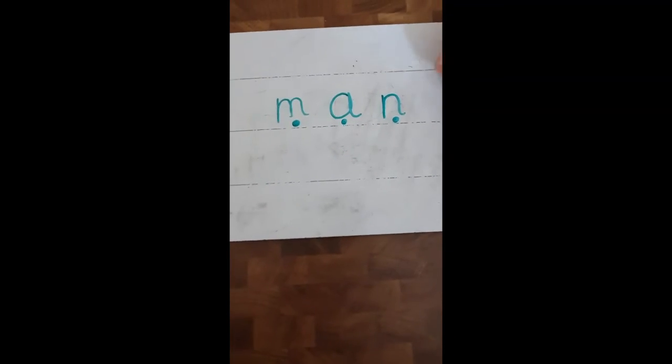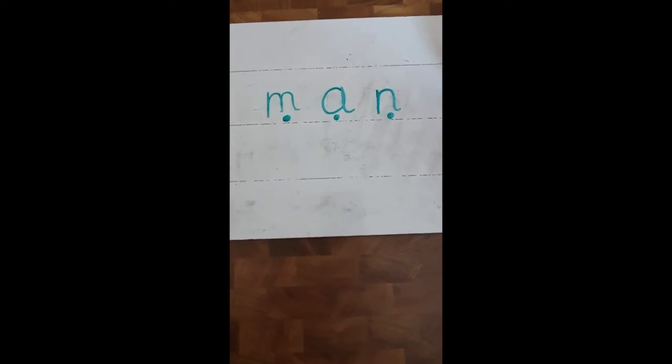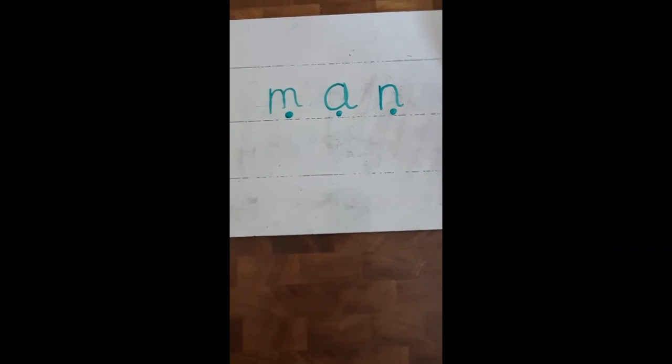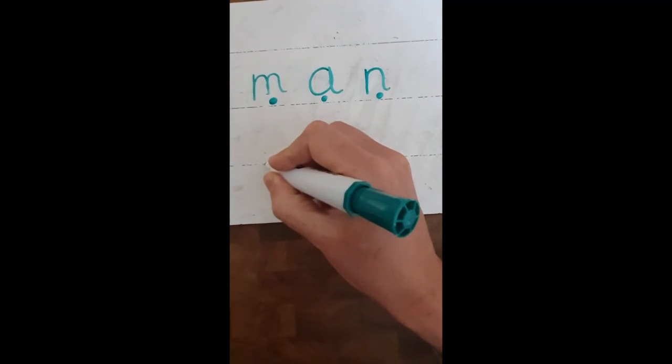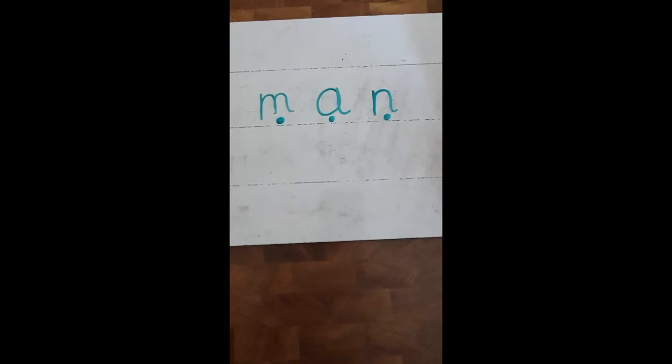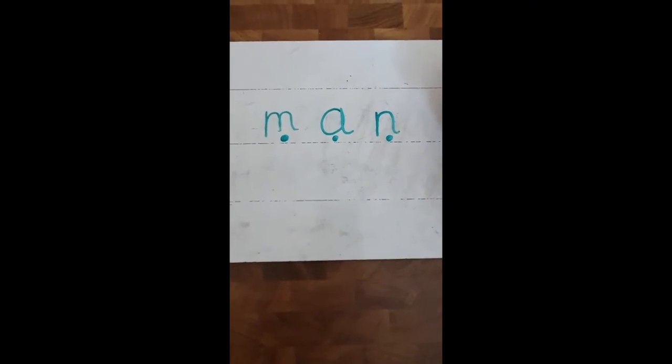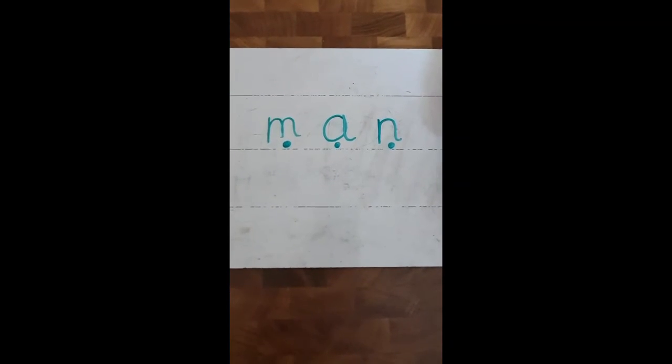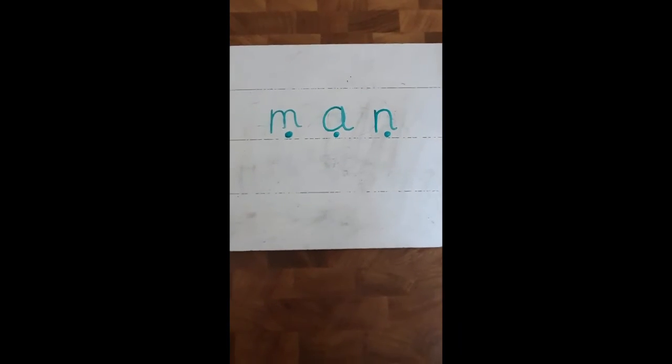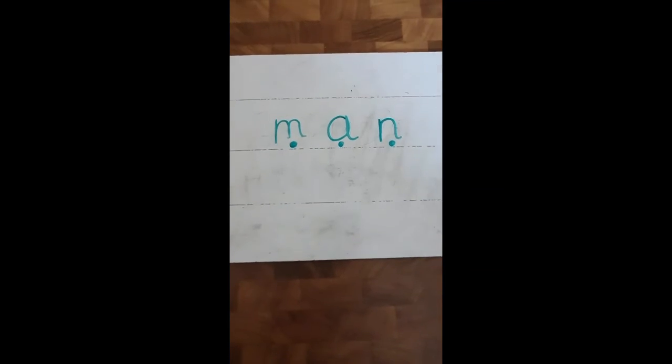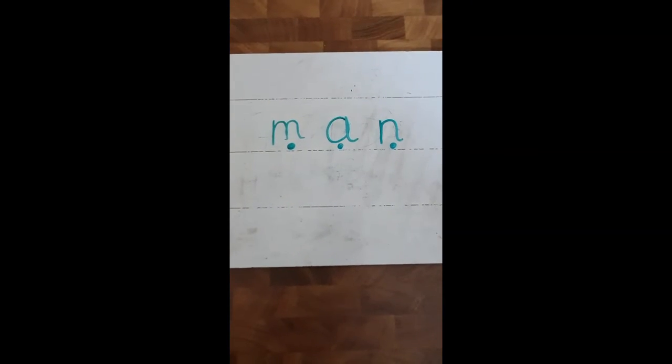And I'd like to try one more, and this one actually does have a digraph. So this one I'd like to try is mash, like mashed potato. So I'd like to criss-cross it. Ready, off we go, m, a, sh, mash. And now put it in your head, pass it on your head. Ready, off we go, m, a, sh, mash.